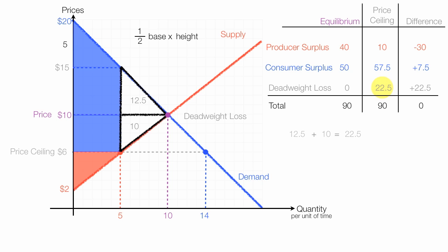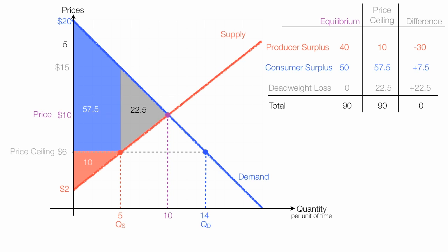Let me organize this a little bit better, and shade in, and put some numbers here. Producer surplus has gone down. Consumer surplus has gone up. And there's a deadweight loss to society. And all of this has caused a shortage. So there you have it.